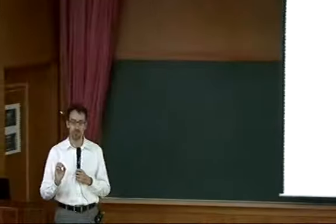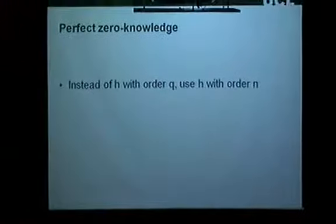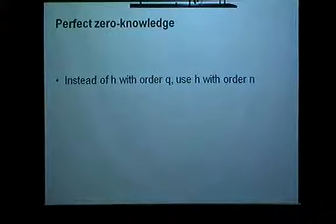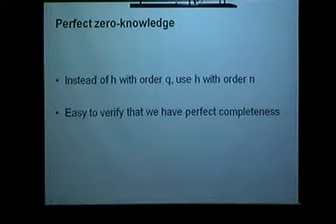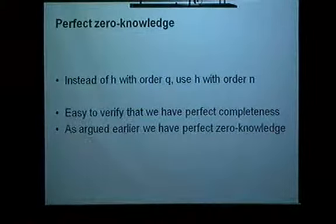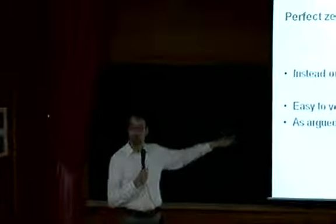It's an extremely simple idea. Instead of starting with h having order q, we just start with h having order n on the common reference string. As we saw before, it's easy to verify perfect completeness — exactly the same computations as before. This is also a zero-knowledge proof with perfect zero-knowledge, because the only difference between a real and a simulated proof was changing the common reference string from order q to order n. Now we're starting out with order n, so we have perfect zero-knowledge, and that comes automatically.